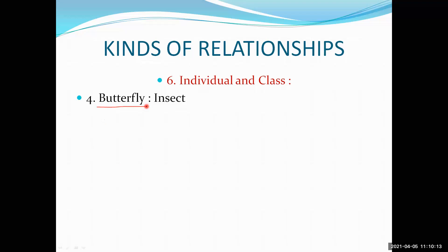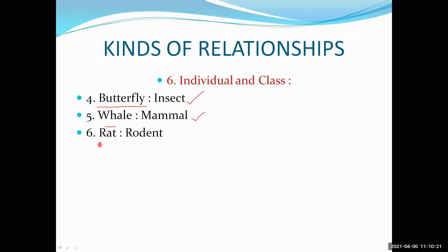Similarly, butterfly — what is the butterfly? Butterfly is an insect. Again, man and whale both are mammals. Rat is a rodent. Rodent means that category called rodent.